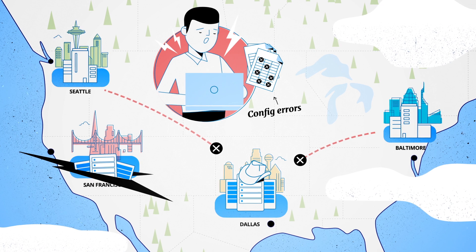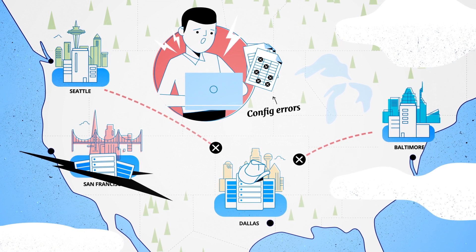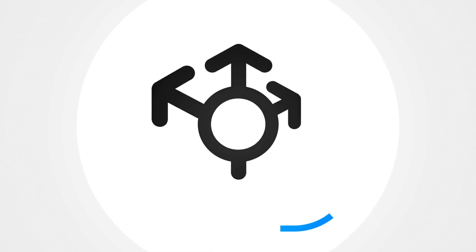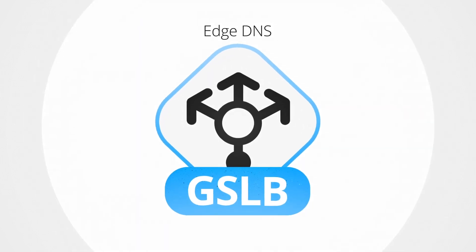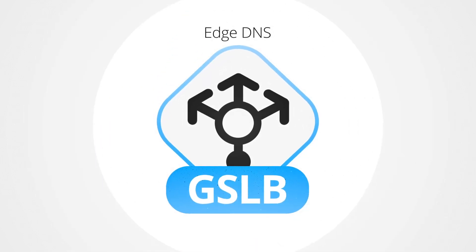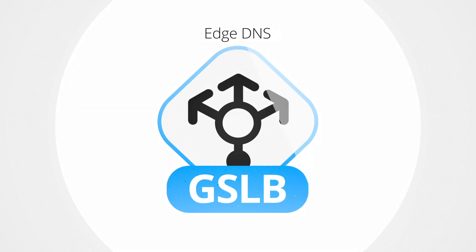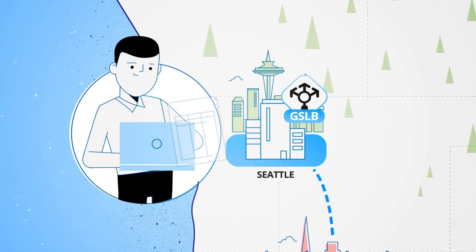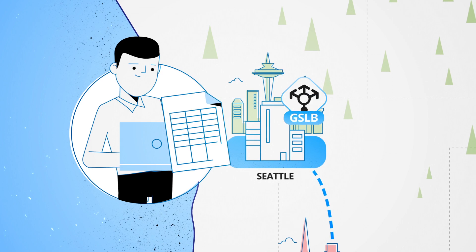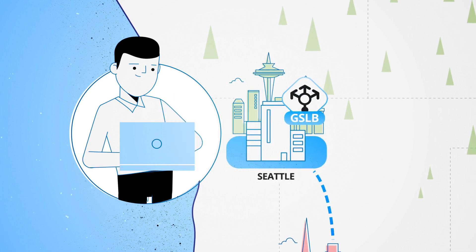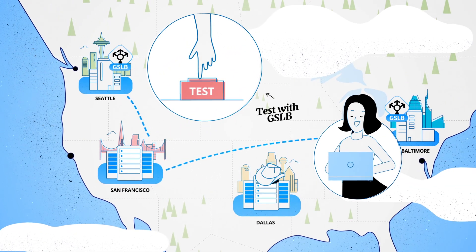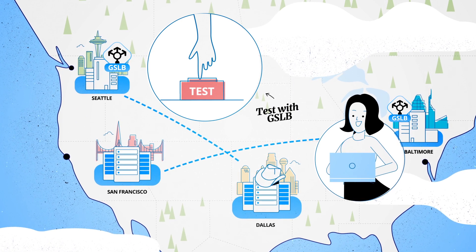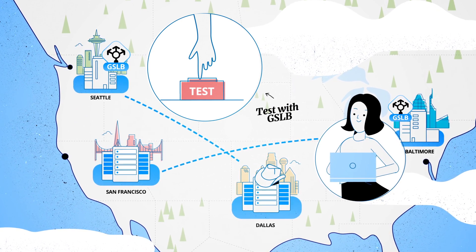Tom is really worried apps will become temporarily unavailable. With EfficientIP Edge DNS Global Server Load Balancing, everything is far more simple. Tom can specify data center switchover in the GSLB, and with the solution being at the network edge, he can test the DRP scenario for just one pilot site.